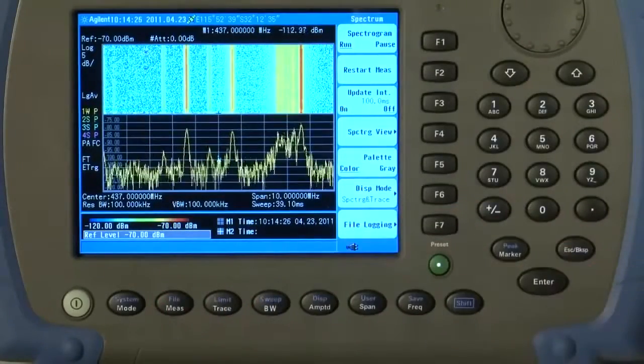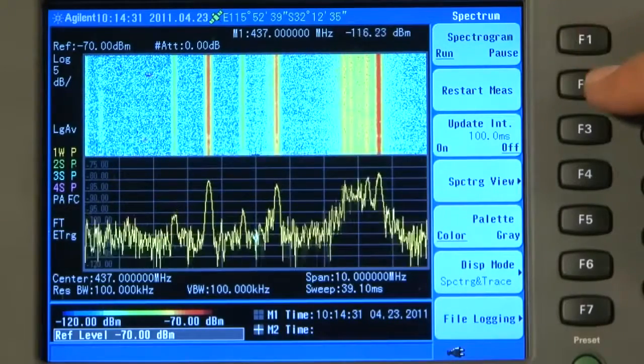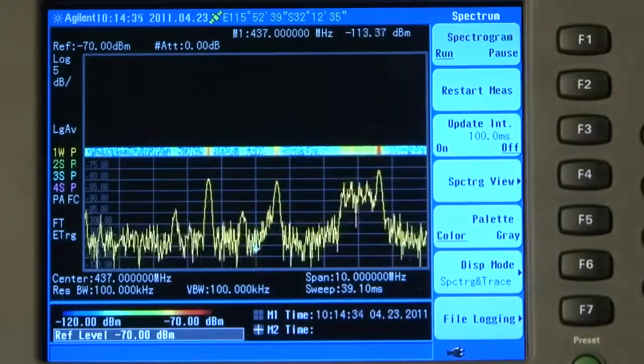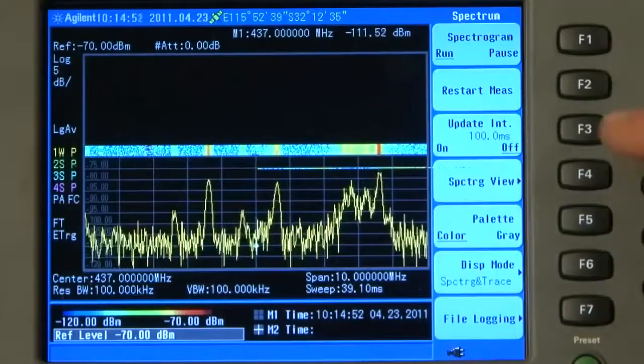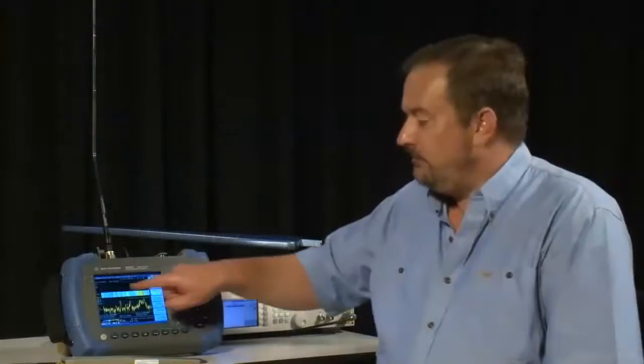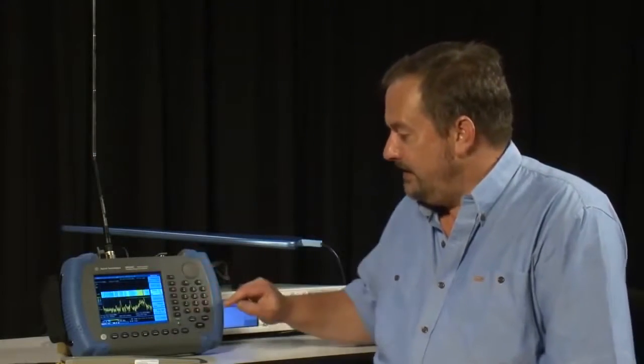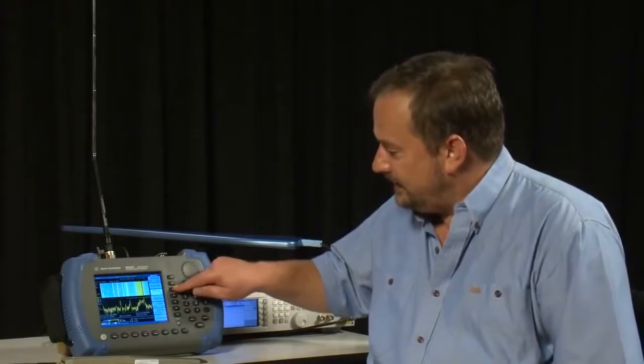If I press the Measure button, you will see here we can pause and run the spectrogram. We can restart the measurement, clearing all the traces that we have stored in the internal memory. And we can even set the Update Interval, currently set to 100 milliseconds. But let us say I wanted only to record a new trace every 10 seconds, for example. I could type in 10 seconds for that. And now the instrument will pause for 10 seconds and then add a new measurement to that stack of traces in the spectrogram display. I will set the Update Interval back to its fastest, 100 milliseconds.